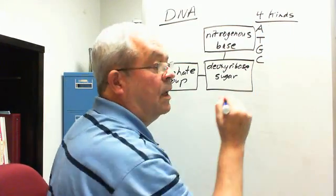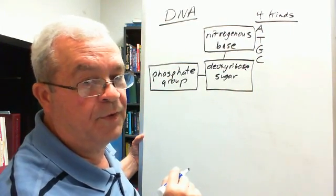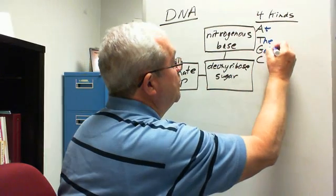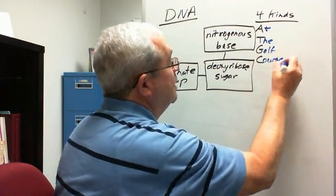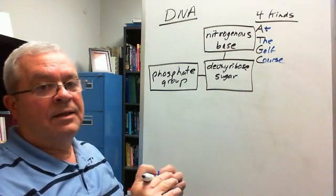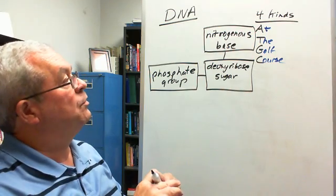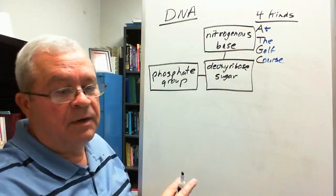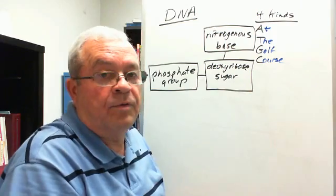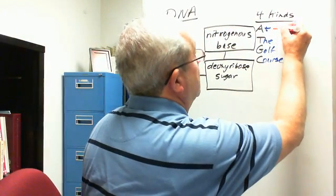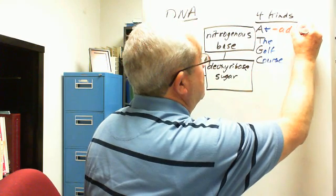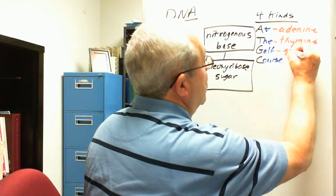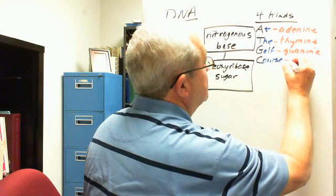The acronym is a place that maybe a few of us would rather be than watching this video — at the golf course. A stands for the nitrogenous base adenine, T for thymine, G for guanine, and C for cytosine.